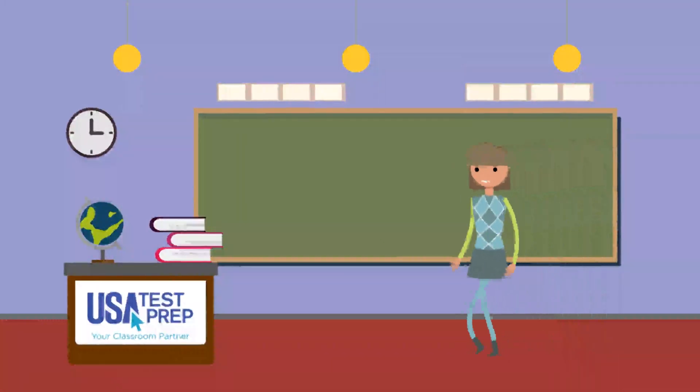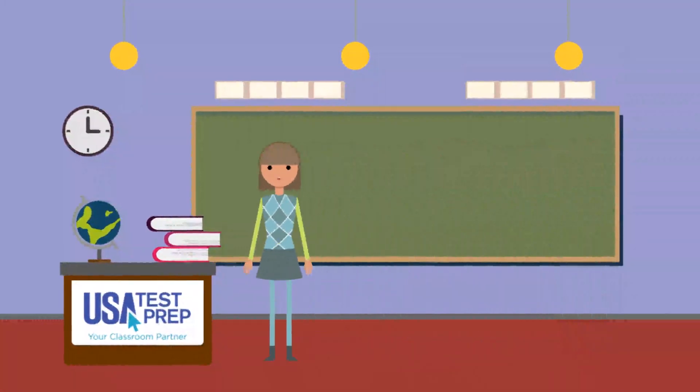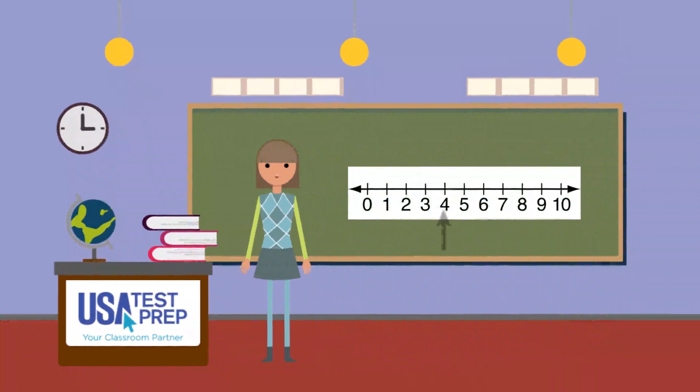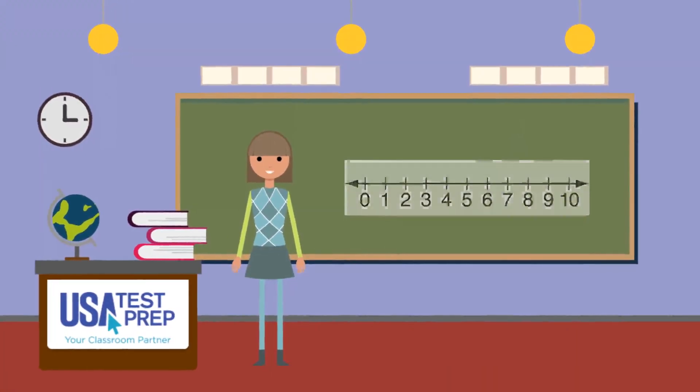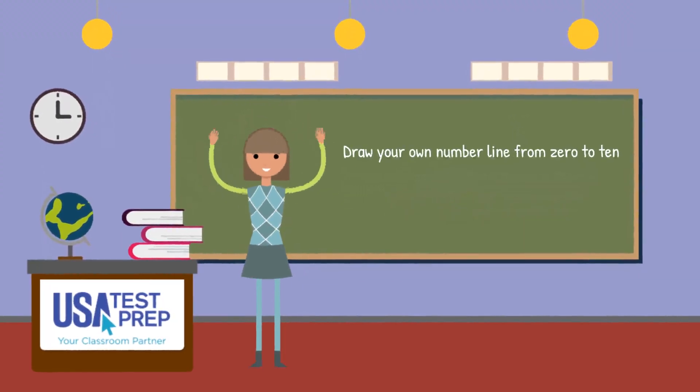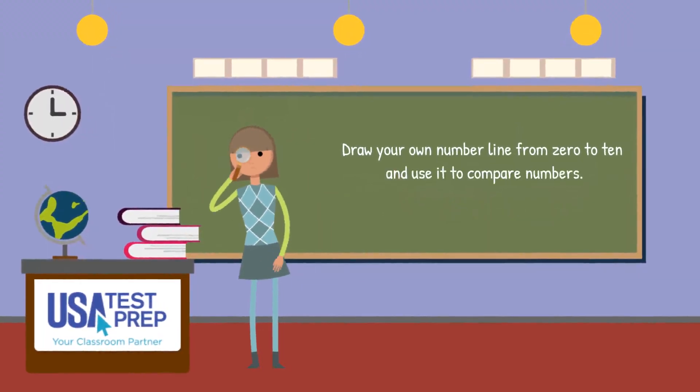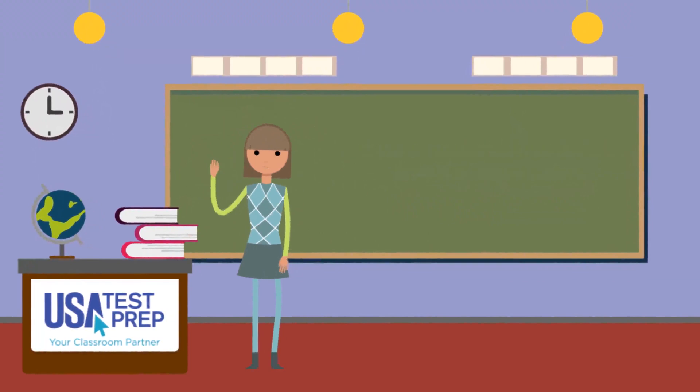I had a fantastic time learning about number lines. Remember, number lines can help compare numbers, and the numbers are shown as equally spaced points on the number line. Now it's your turn. Draw your own number line from 0 to 10 and use it to compare numbers. Thanks for joining me. See ya!